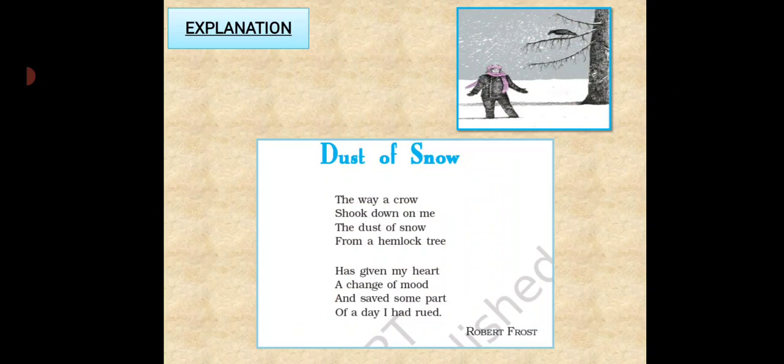first we will see the rhyme scheme. The first four lines. We have A, B, A, B. Crow and snow have same sound. So A, A. Me, tree, same sound. So here we will see the rhyme scheme is A, B, A, B.